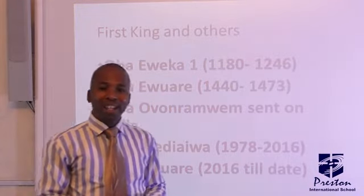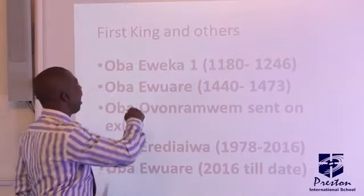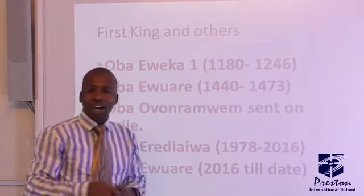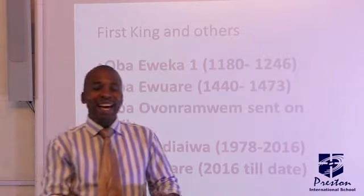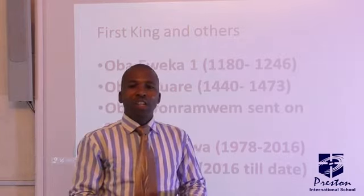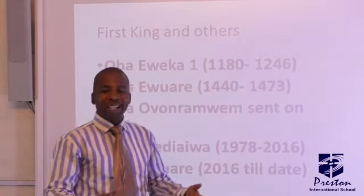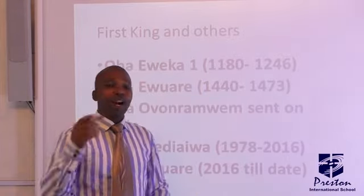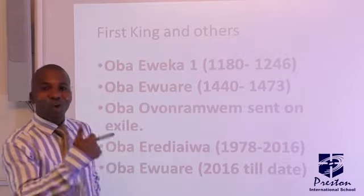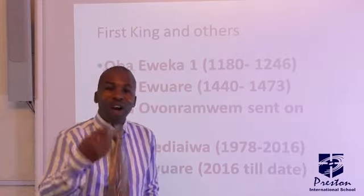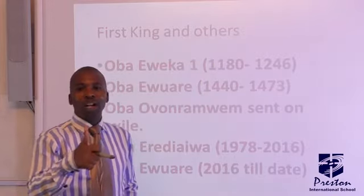The first king in the Bini kingdom was Oba Eweka. Like the Yoruba system, they also practiced a monarchical system where the king is at the center of administration. So also in Bini, they have a king at the center of administration who controls the affairs of the society and the kingdom. In our Google classroom we shall be discussing more on this, taking the kings one after the other and their reigns in the Bini kingdom. God bless you.